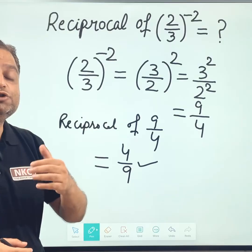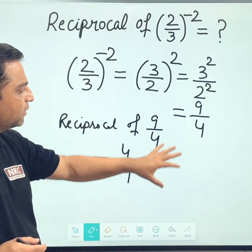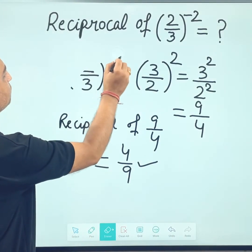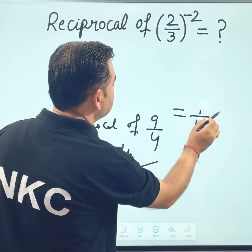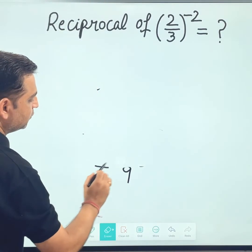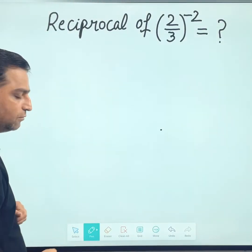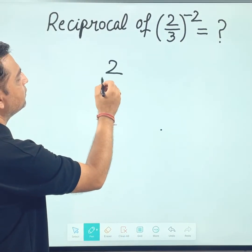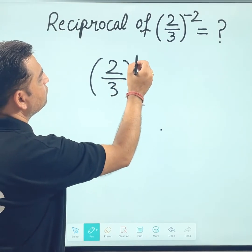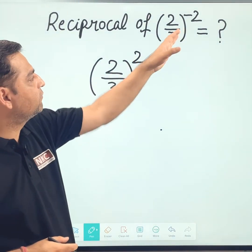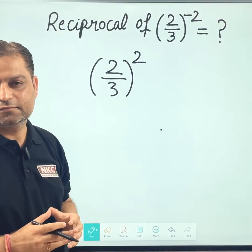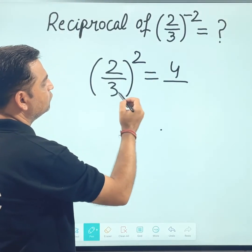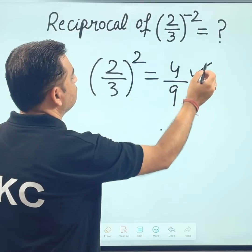Now there is a short way also. We have clarified our concept that yes, 4 upon 9 is the answer. Now let us come to the short method as well. We must be clear with the short method. Because whenever the exponent is negative, the other way of remembering it is: reciprocal of 2 over 3 to the power minus 2 — just change the exponent into positive. It was a negative exponent; just change it into positive and you will get the answer. This is the reciprocal. Square of 2 is 4, square of 3 is 9, so 4 over 9 is the answer.